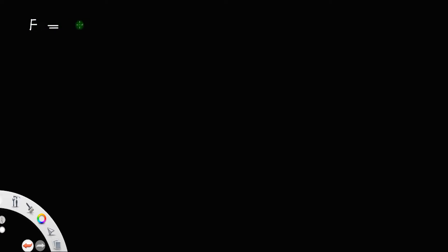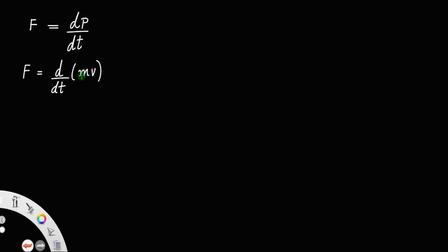From Newton's second law, we have the force acting on a body F is equal to the rate of change of momentum of the body. The momentum of a body is always the product of mass of the body into its velocity. If a body of mass m is moving with velocity v, then its momentum will be mass into its velocity.